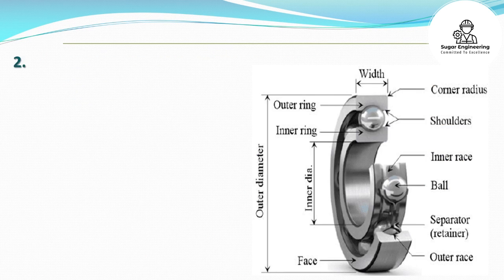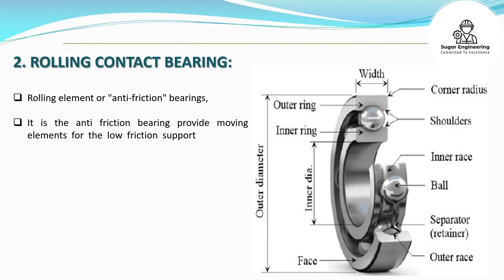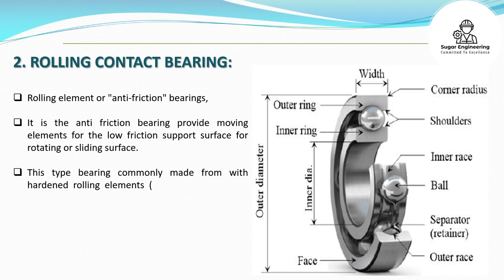Rolling contact bearings, also called rolling element or anti-friction bearings, provide moving elements for the low-friction support of rotating or sliding surfaces. This type of bearing is commonly made with hardened rolling elements — balls and rollers — and races.